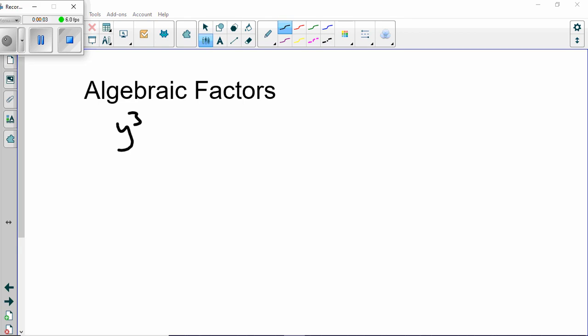I'm going to look at algebraic factors and what I've got here is y cubed. I'm going to work with y cubed much as I did with the number six. So what I'm thinking of is, what factors are there of y cubed? In other words, what two things multiply together can make y cubed?